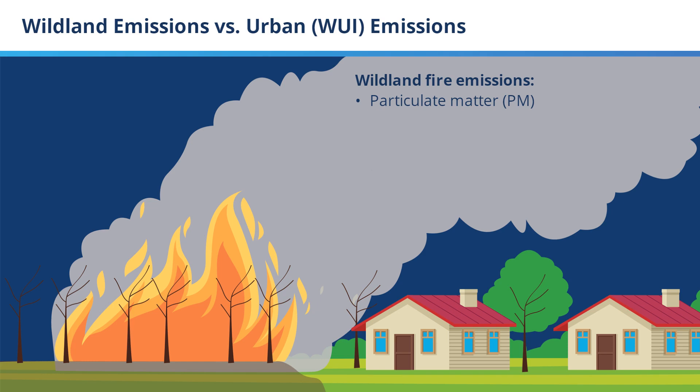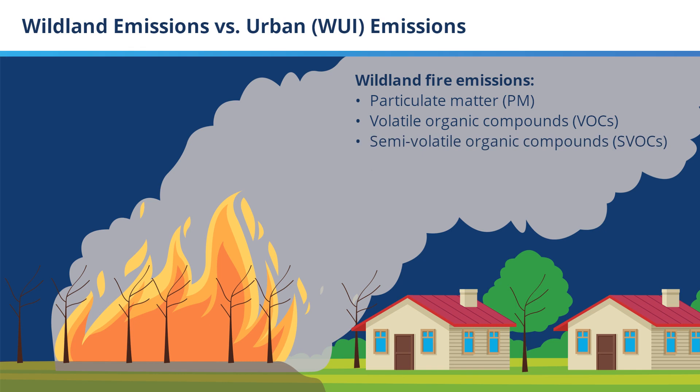In addition, wildfires emit smoke consisting of a range of different compounds, including volatile organic compounds, or VOCs, and semi-volatile organic compounds, or SVOCs. These emissions represent a vast array of chemicals — some of which are acutely toxic, some are irritants, and some are known carcinogens. All of these compounds are emitted from natural vegetation like trees, shrubs, and grasses when they burn.